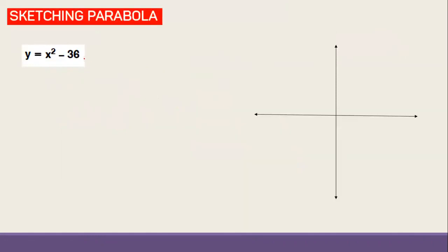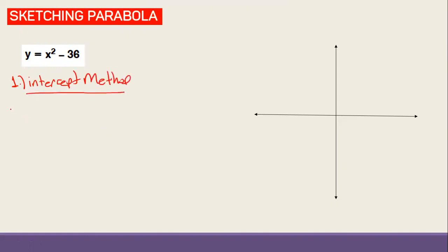We have two methods to draw the graph of a parabola. The first one is the intercept method. For the intercept method, you first let x equal zero, and then you let y equal zero. You are going to get three points from there, and then place them on the coordinate system and join them by curves.